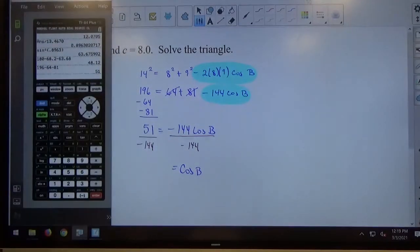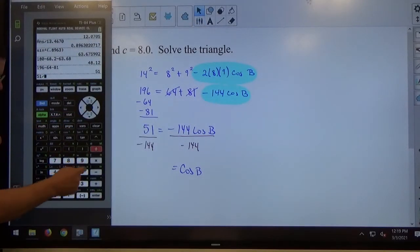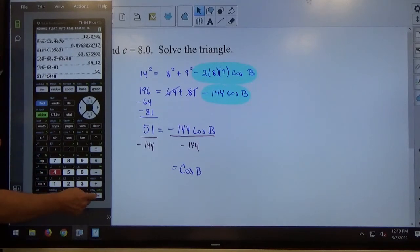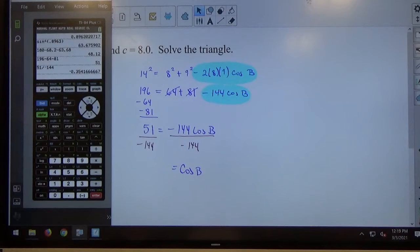And then I get my calculator out. I'm going to type in exactly what I see. 51 divided by negative 144. Signs do matter in this situation, so make sure you're careful with signs. We get negative 0.3542.